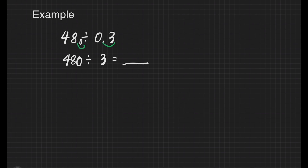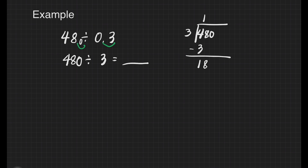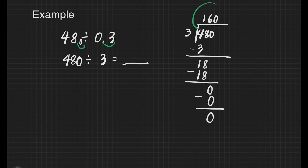Let us start dividing: 480 divided by 3. How many 3s are there in 4? There's 1. 1 times 3 is 3. Subtract: 4 minus 3 is 1. Bring down 8. How many 3s are there in 18? There's 6. 6 times 3 is 18. Subtract: 18 minus 18 is 0. Bring down 0. How many 3s are there in 0? That's 0. 0 times 3 is 0. 0 minus 0 is 0. It means our answer is 160.